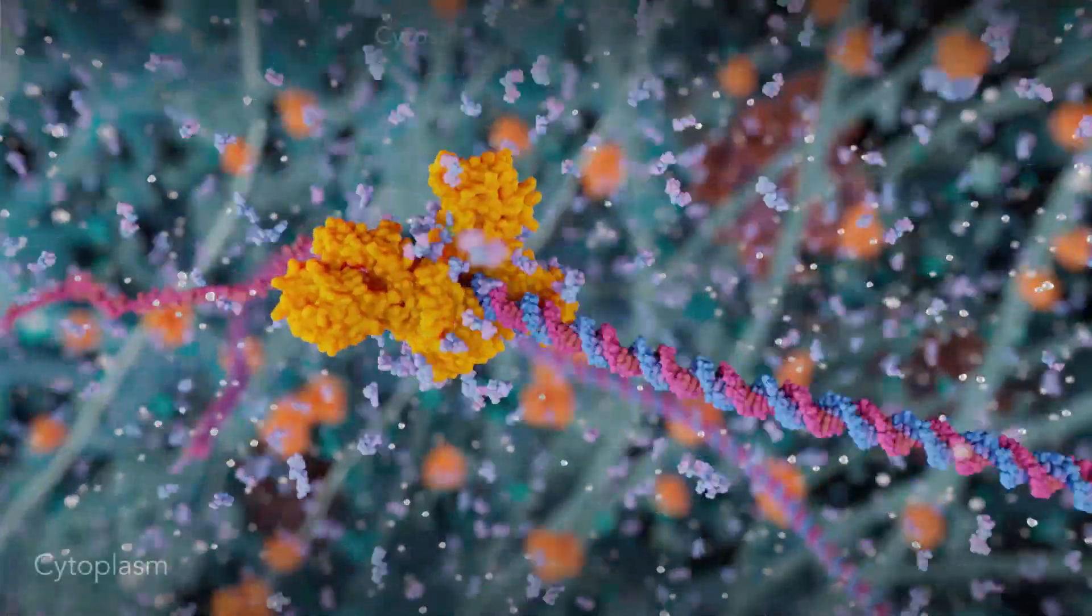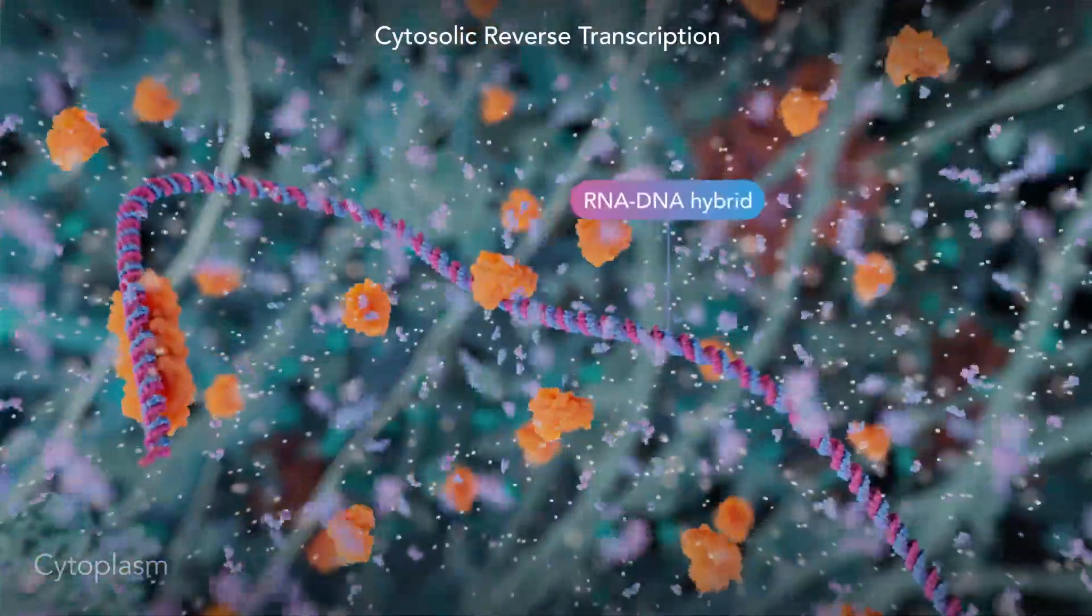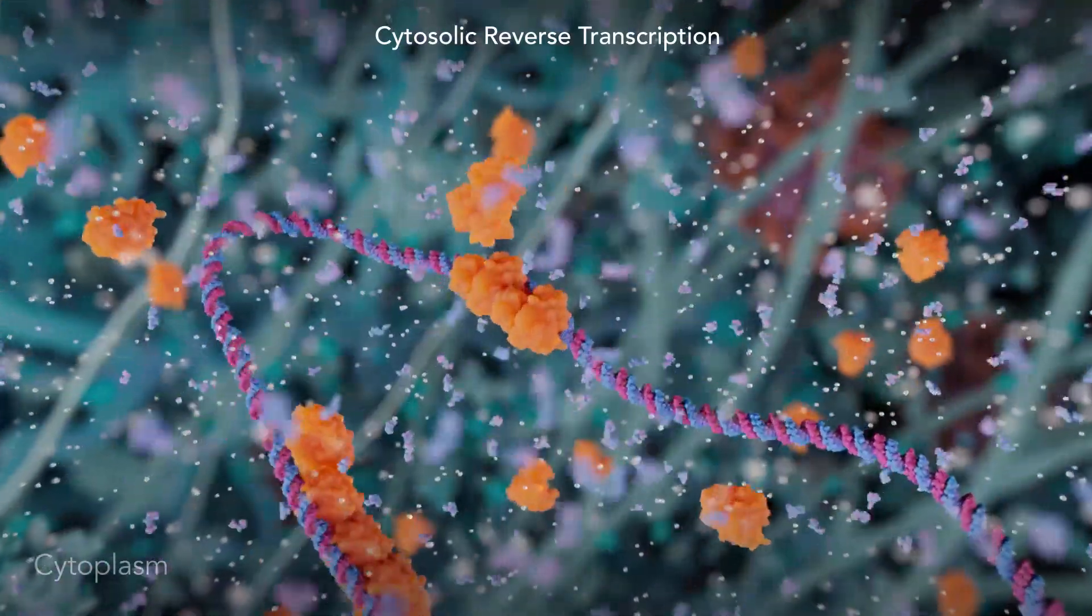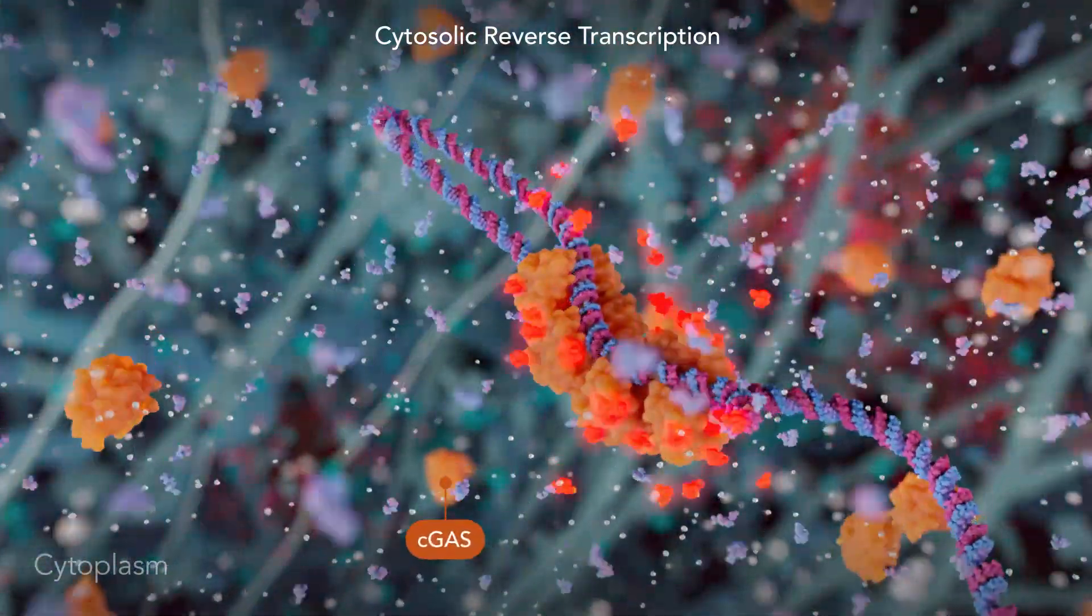Reverse transcription can also happen in the cytoplasm, where it creates RNA-DNA hybrids, aberrant products which can trigger inflammation.